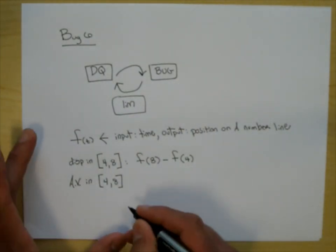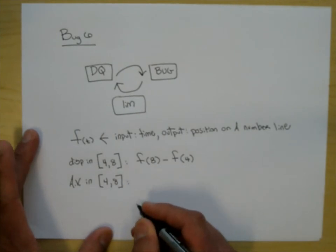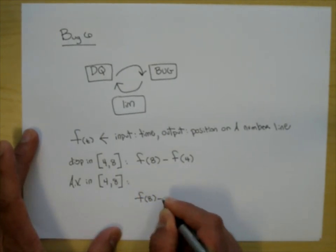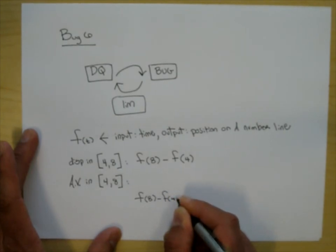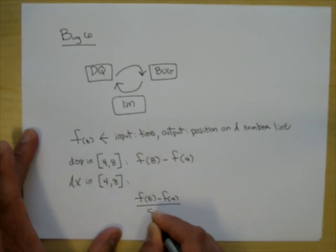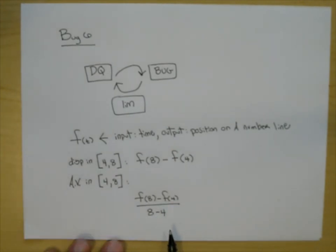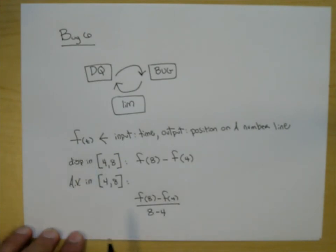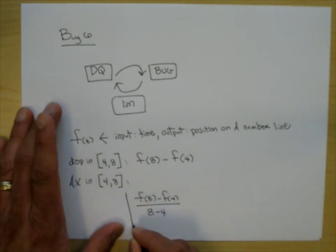We can go: here's the displacement, F of 8 minus F of 4, all over 8 minus 4. And it also looks like rise over run. The average velocity happens to be the slope of a secant line when you graph F of T.